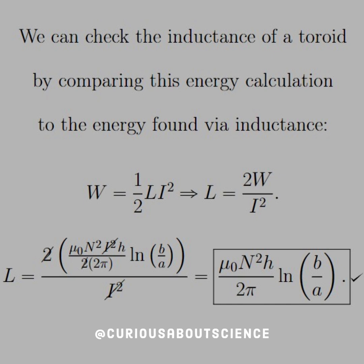Why did we leave it in that form? We know we can check the inductance of a toroid by comparing the energy of this calculation to the energy found via the inductance. We know that the energy found via the inductance is W = ½LI². Solving for L, we get L = 2W / I². Plugging this energy in, we see that the 2 in the numerator cancels with the 2 in the fraction of the energy we found. The I's cancel, and we're left with L = μ₀N²H / (2π) · ln(B/A). This is self-consistent, and it proves once again that there are multiple routes to get to the same answer.